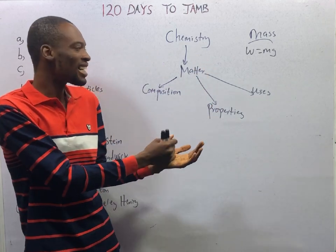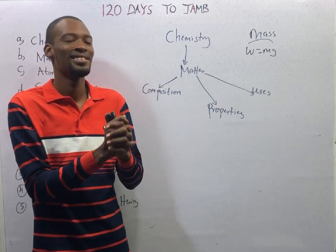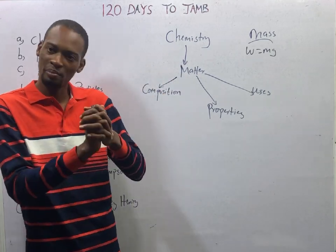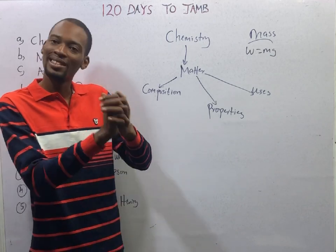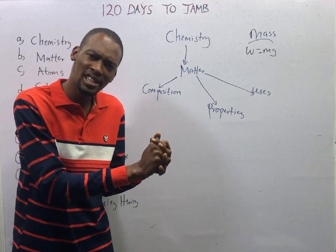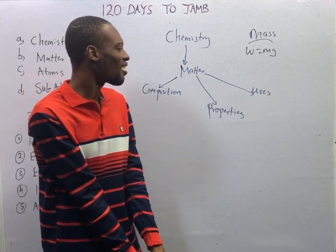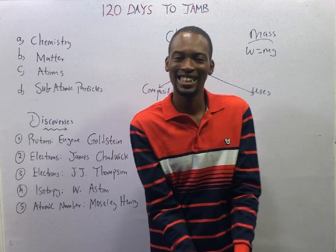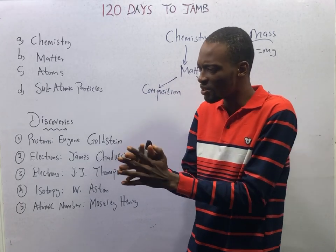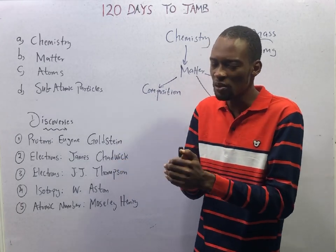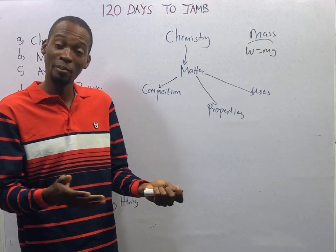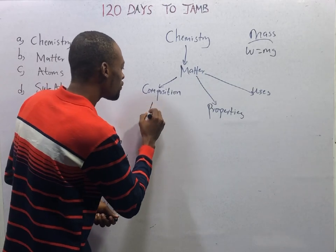The pure substances are elements and compounds. The impure part of matter is referred to as mixtures. The same matter can exist in different forms: solid, liquid, and gas. The difference between these states is the force of attraction or the separation between the molecules. Matter is composed of atoms.